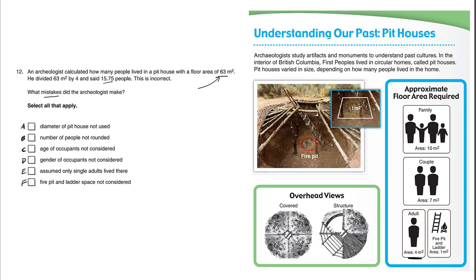Choice B: number of people not rounded. If an archaeologist said they think 15.75 people live in the home, it's kind of silly — we shouldn't talk about decimal numbers when talking about number of people. So this is a mistake. You can see where he or she got this number: you take the area 63, divide it by four assuming everyone's an adult, and get 15.75. But we really shouldn't leave this number unrounded.